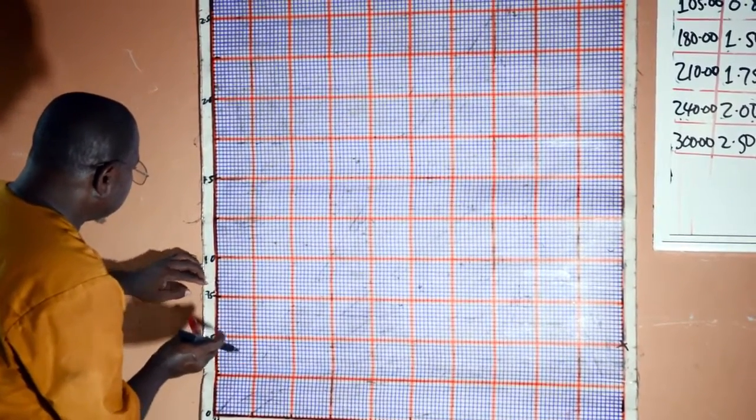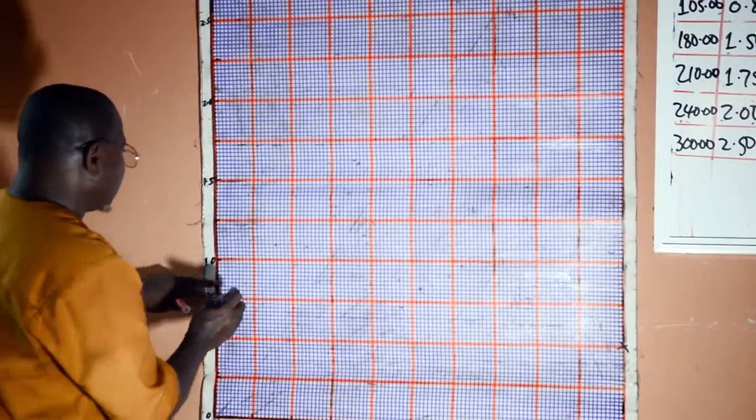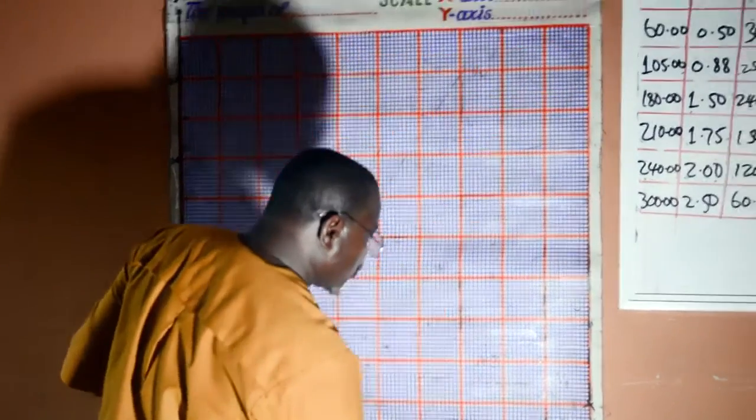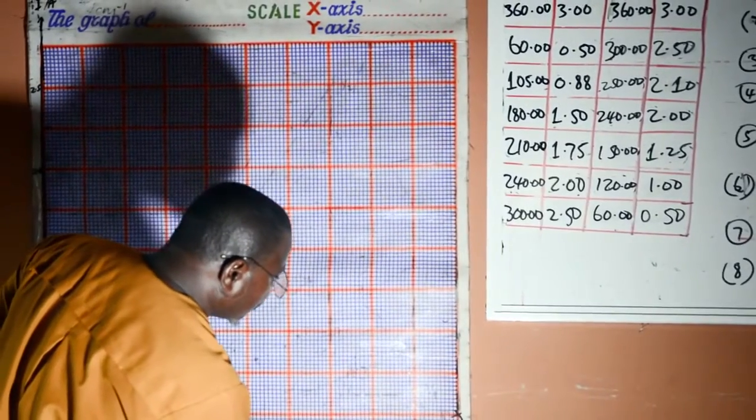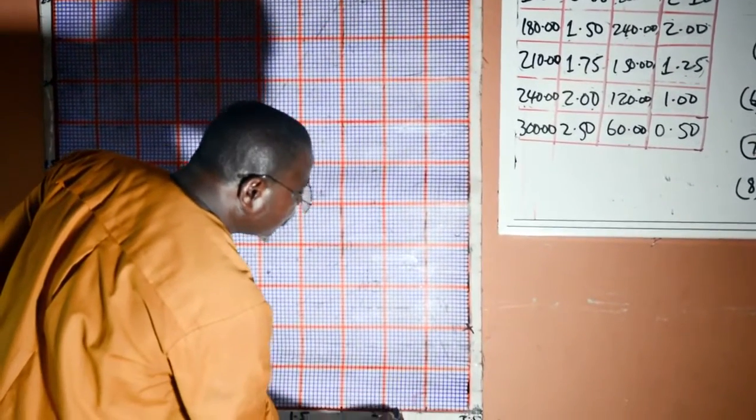So that is the fourth line. Again, 2.1 will be somewhere here.